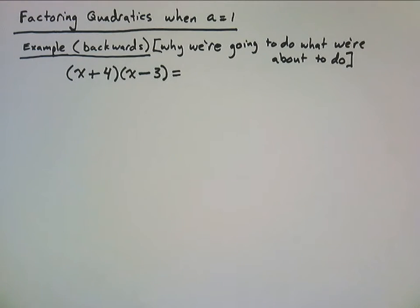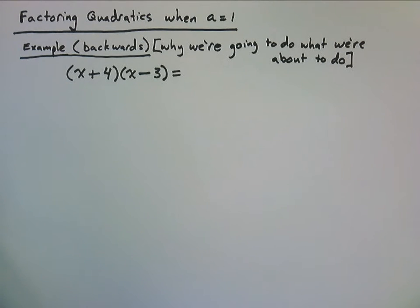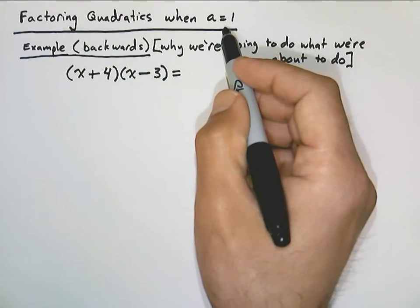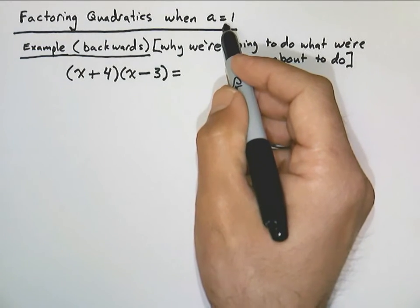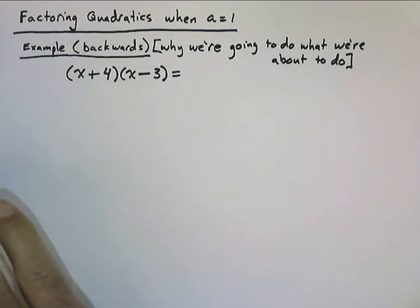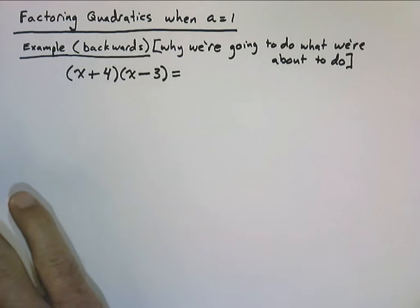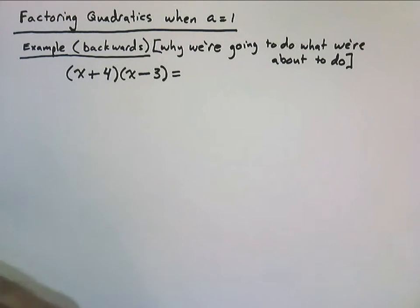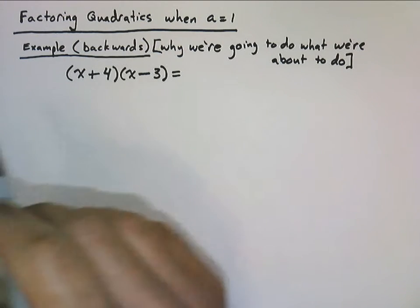The next simplest kind of factoring is factoring quadratics, and this is mostly what we're going to focus on — just factoring quadratics where a, meaning the coefficient of x squared, is just one. Let's look at an example to show why we're going to do what we're going to do here.